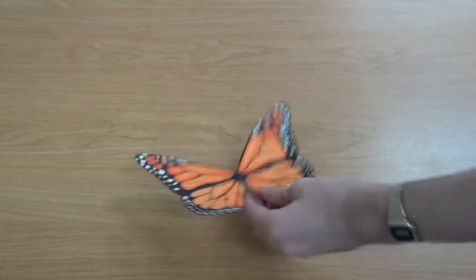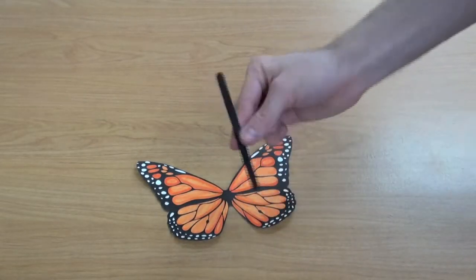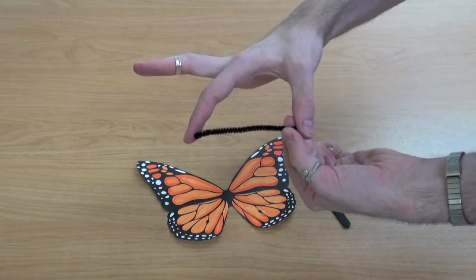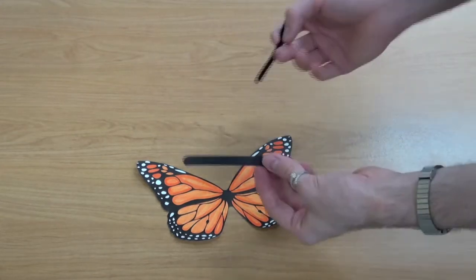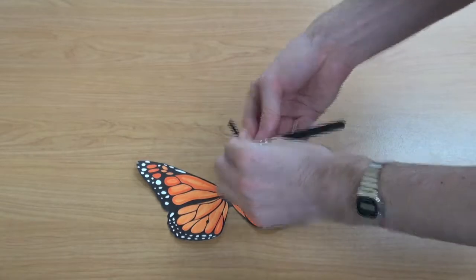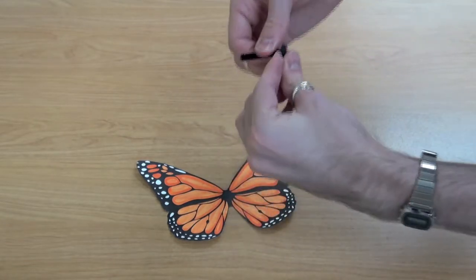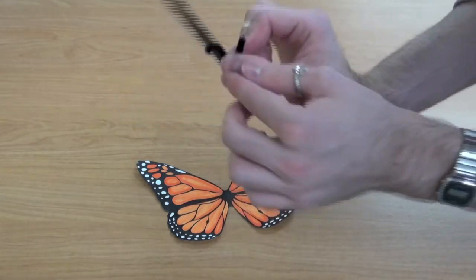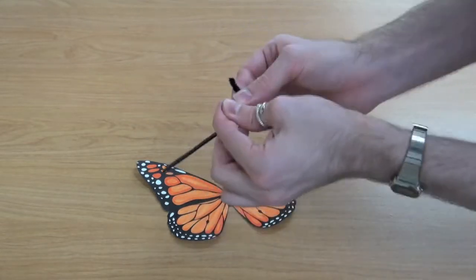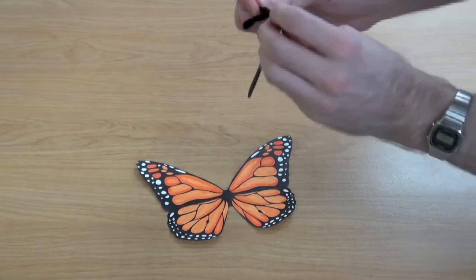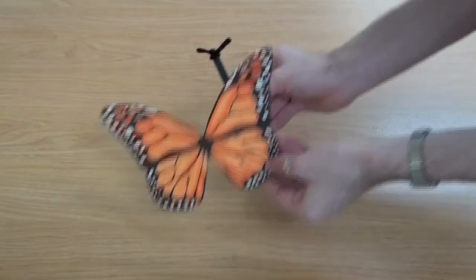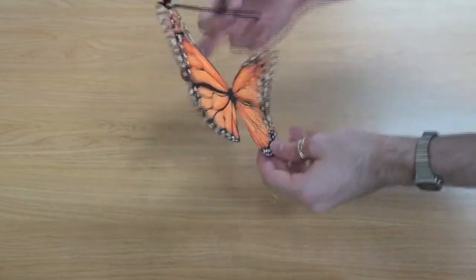The popsicle stick is done drying. We're going to take about two inches of pipe cleaner and wrap it around for the antenna. At the top, I'm just curving down the very top to make a little ball to make it more resemble a butterfly. Once you're done, flip your wings over and tape down the body.